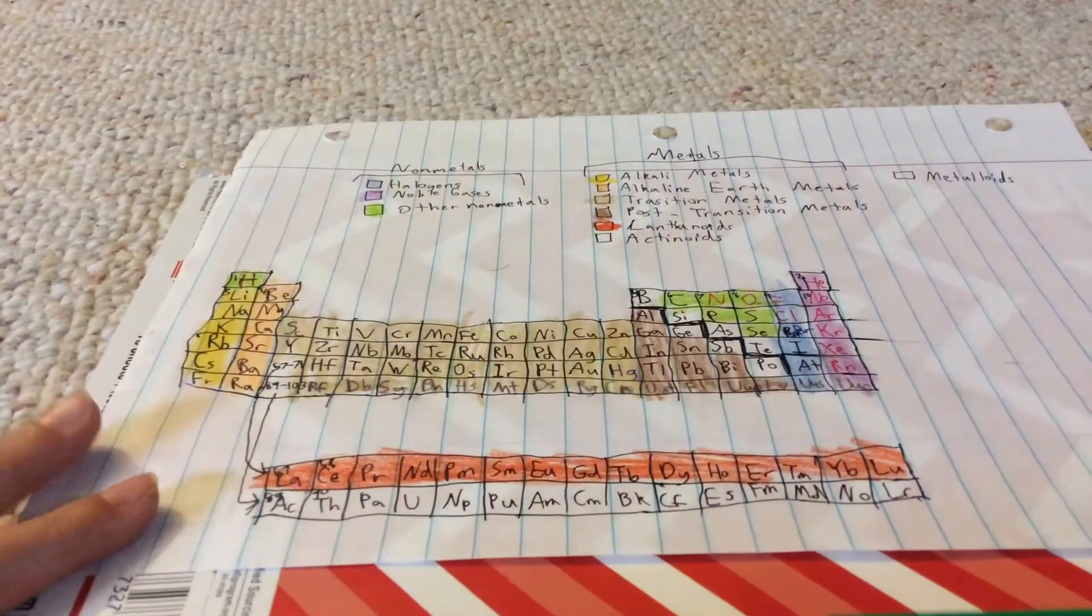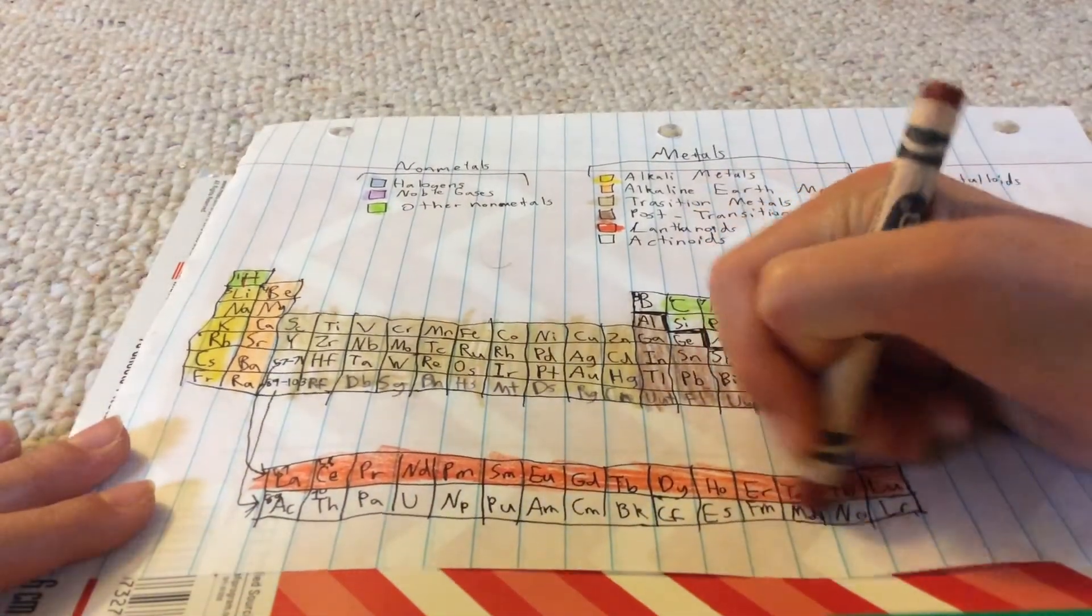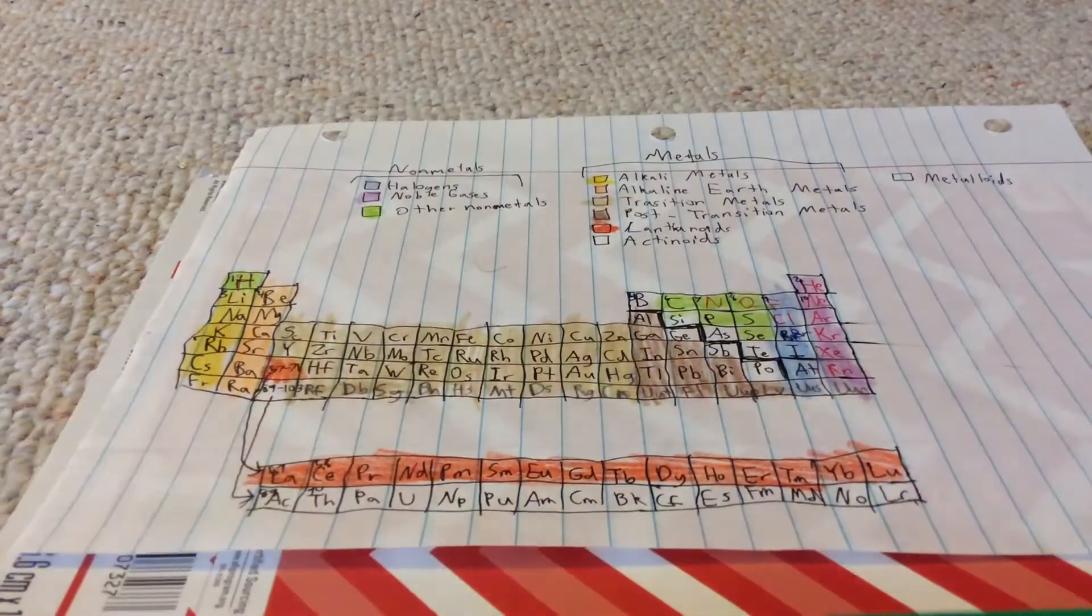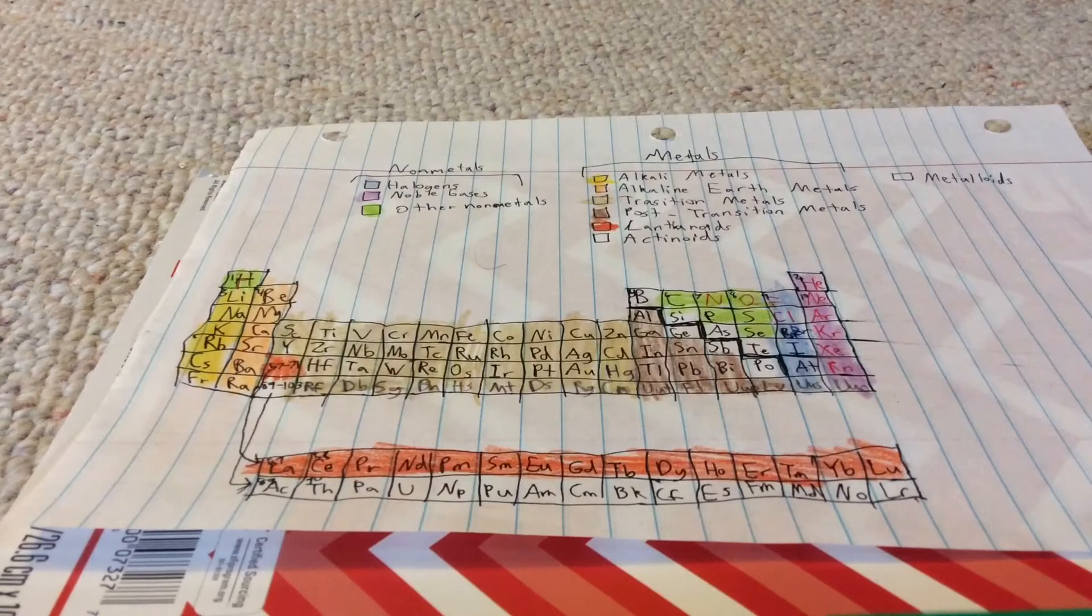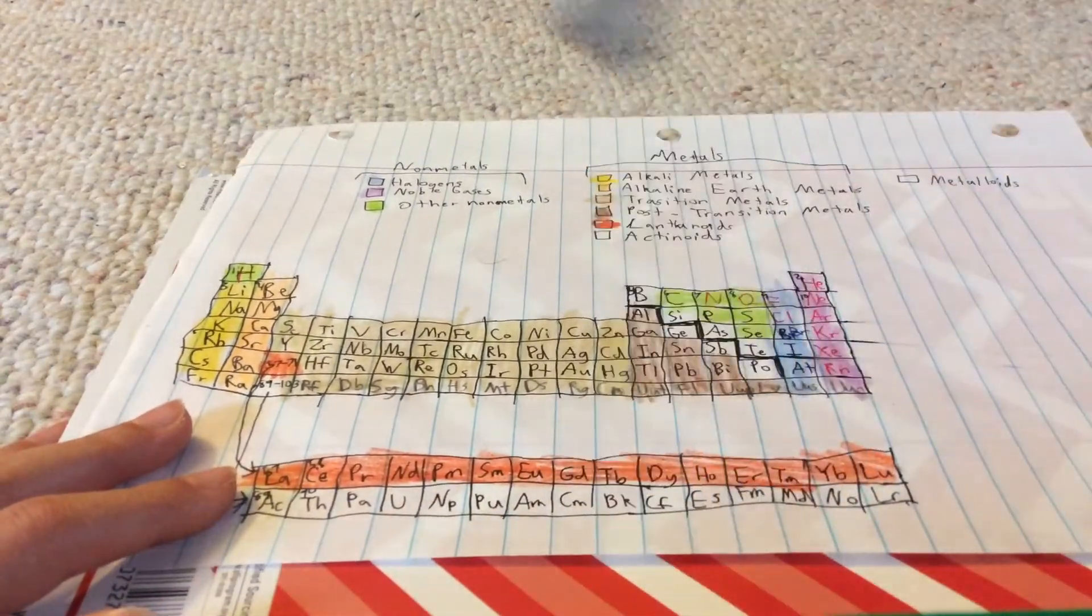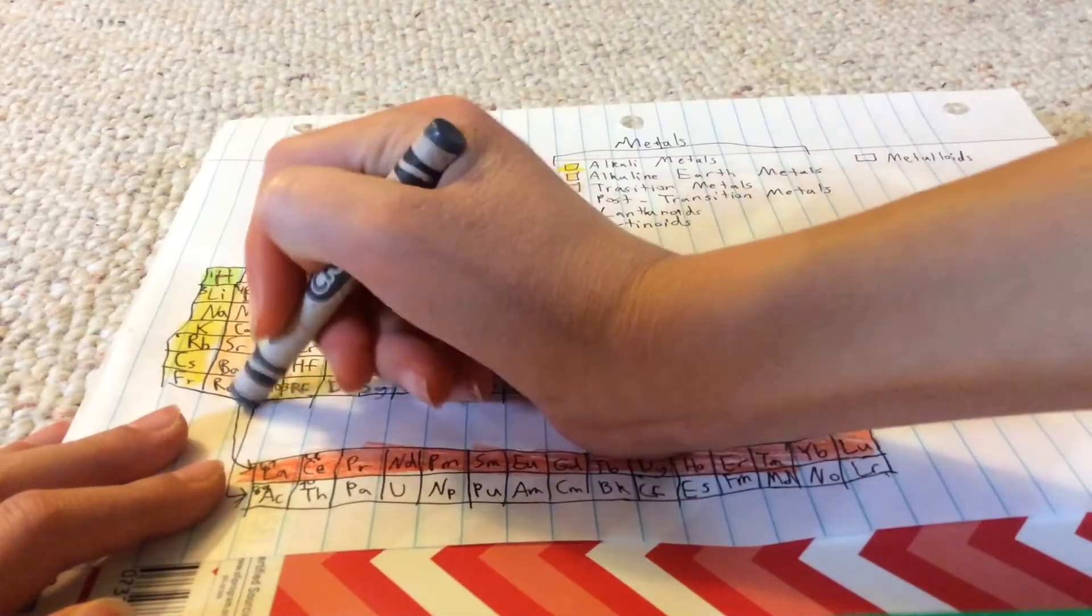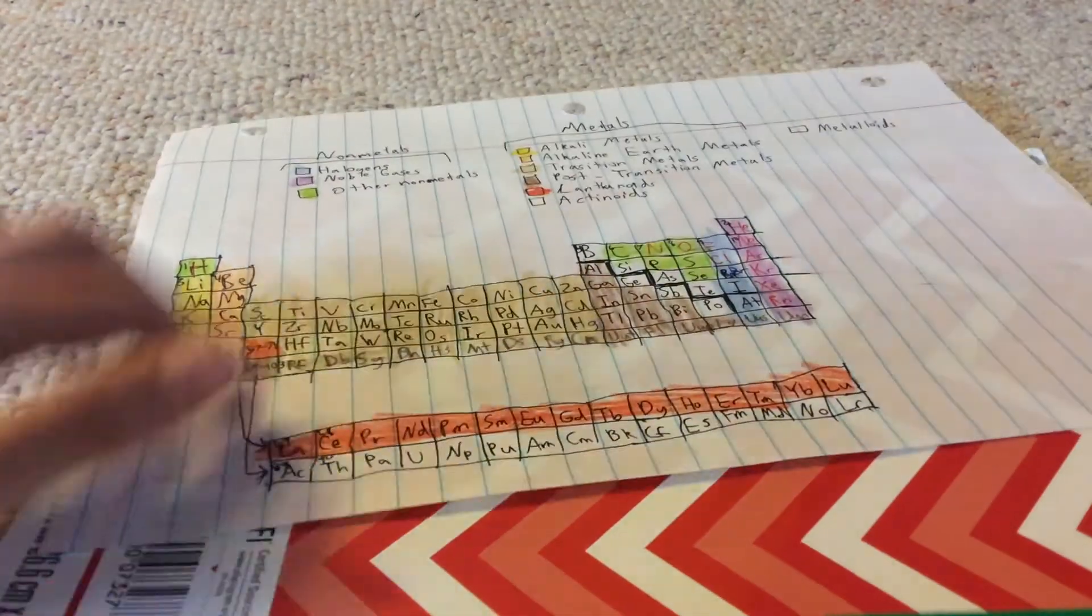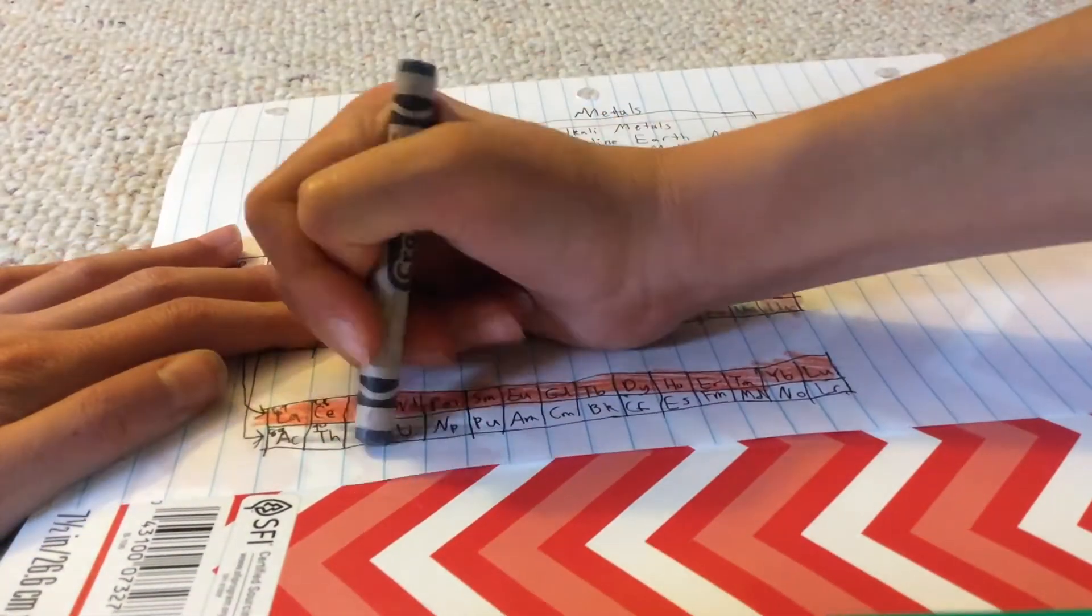And that's just that. We also have to color in the 57 to 71. You can see, now onto the actinoids which I said I'd make it gray. Let's do the 89 to 103 and this part down here.